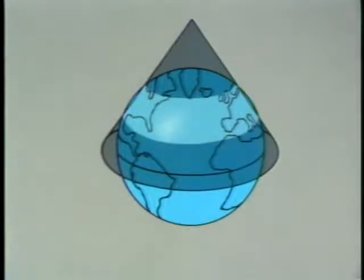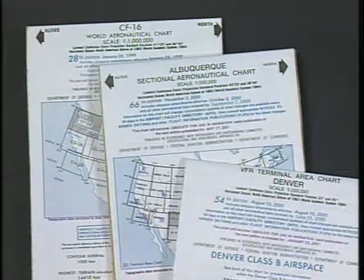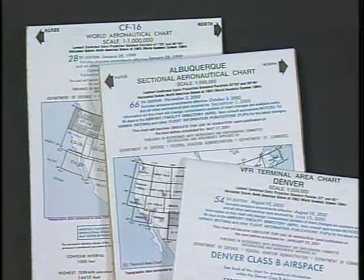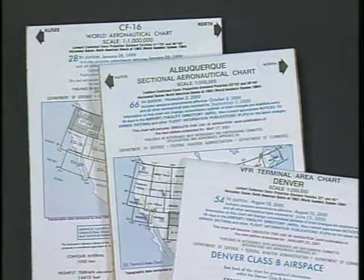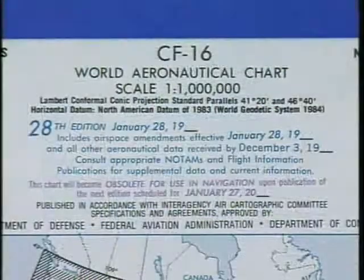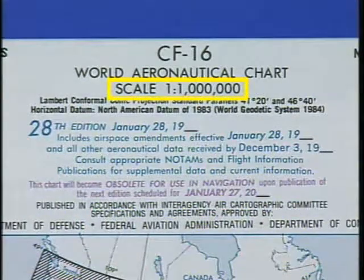One method is the Lambert conformal conic projection, which makes a sectional cut through the globe. This projection is used for the three charts you will use most during your VFR flying: the world aeronautical chart, the sectional chart, and the VFR terminal area chart. The world aeronautical chart, or WAC chart, has a scale of one to one million and covers the most area.